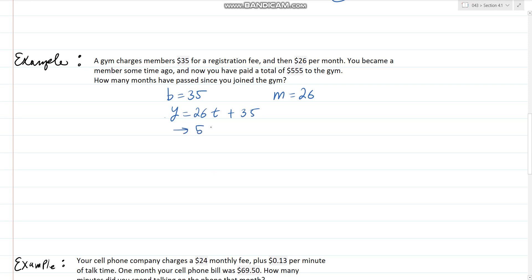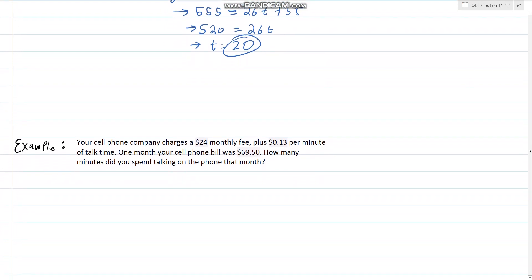We've paid $555, so we can now solve for this t. We have 555 equals 26t plus 35. Subtract 35 from both sides, we have 520 equals 26t. Divide both sides by 26 and we get t equals 20. So it looks like it's been about 20 months since we joined that gym. Yeah, almost two years.